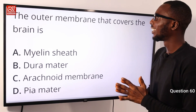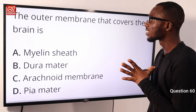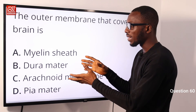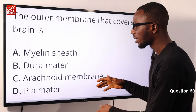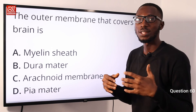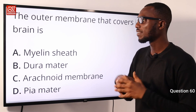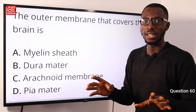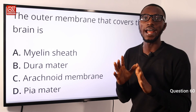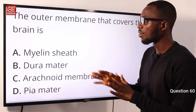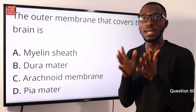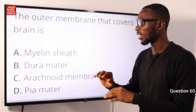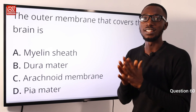Question 60: The outer membrane that covers the brain is what? The dura mater, the arachnoid membrane, and the pia mater all come together to make up the meninges — the protective membrane for the brain. The question specifies the outer membrane. Of these three that form the meninges, the outermost one is the dura mater. So option B is very correct.